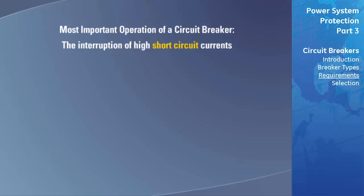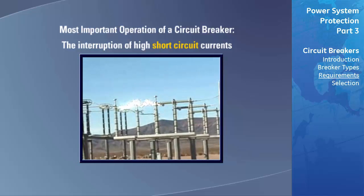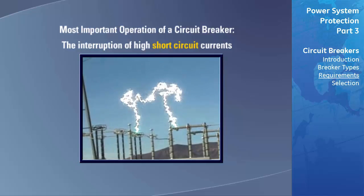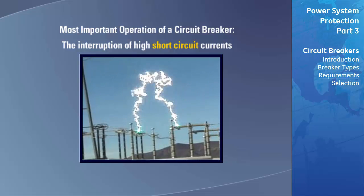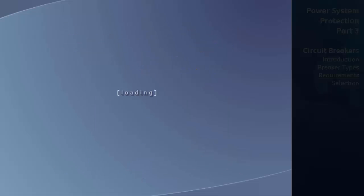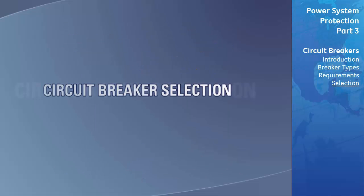The most important operation of a circuit breaker from the protection aspect is the interruption of high short-circuit currents. The energy dissipated during breaker operation is extremely high. For example, the energy dissipated per phase by a three-cycle breaker interrupting 10 kiloamps of short-circuit current is almost equivalent to stopping 100,000 kilograms moving at 36 kilometers per hour in approximately 50 milliseconds.